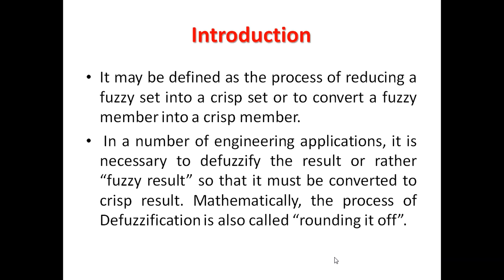In today's tutorial we are going to discuss what defuzzification is. Defuzzification is the process of reducing a fuzzy set into a crisp set, or converting a fuzzy member into a crisp member. Sometimes we may have a situation in which we want our output as a crisp value. In some engineering applications it could be necessary to defuzzify the result rather than keep a fuzzy result, so we convert that fuzzy value into a crisp value. This process of conversion is called defuzzification.